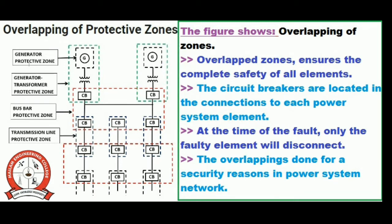The protective zones of the power system can be categorized as: generator protective zone, generator-transformer protective zone, busbar protective zone, and transmission line protective zone. You can see all these zones displayed in the diagrams. Circuit breakers are used to disconnect any element of the system for repairing work, usual operation, maintenance requirements, and also under abnormal conditions like short circuits.